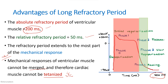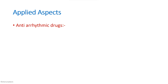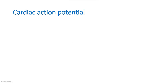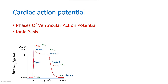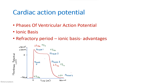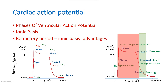The cardiac muscle cannot be tetanized — this can also be asked as a physiological basis question. For applied aspects, you can write about anti-arrhythmic drugs used for treatment of arrhythmia, briefly mentioning two or three drugs and their effects. When answering a question on cardiac action potential, cover the different phases, their ionic basis, a neatly labeled diagram showing currents, the refractory period and its ionic basis, and the advantage that cardiac muscle cannot be tetanized.